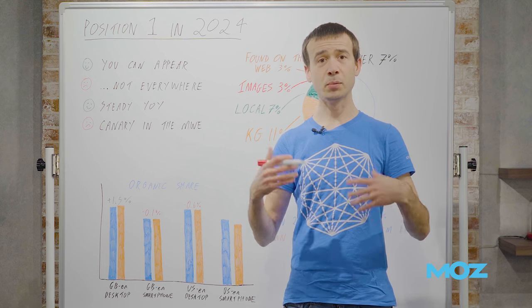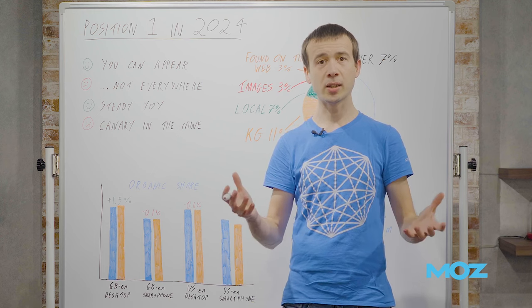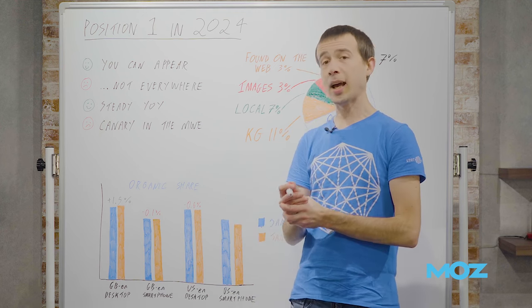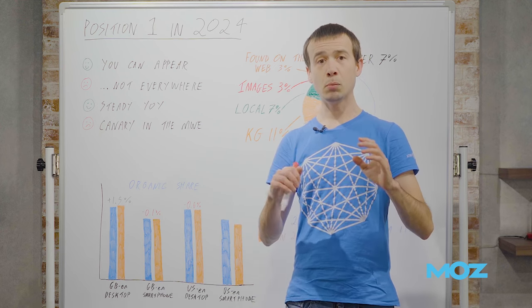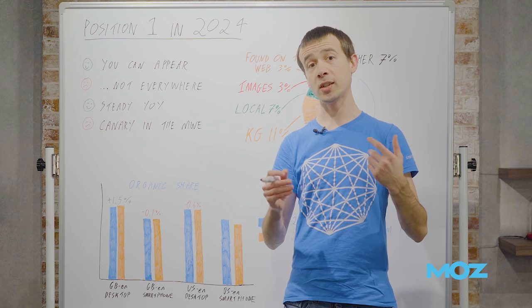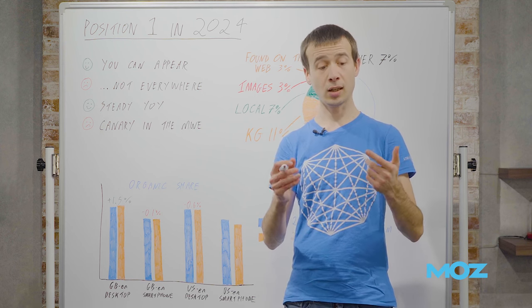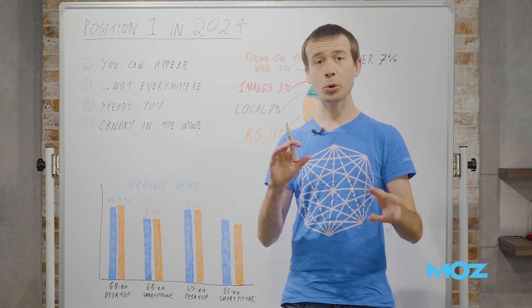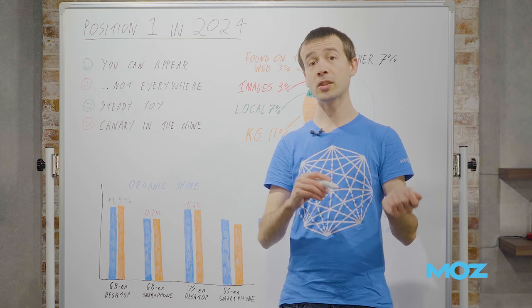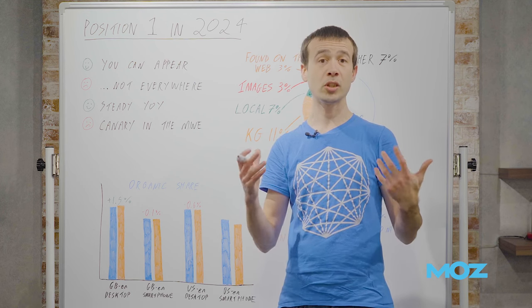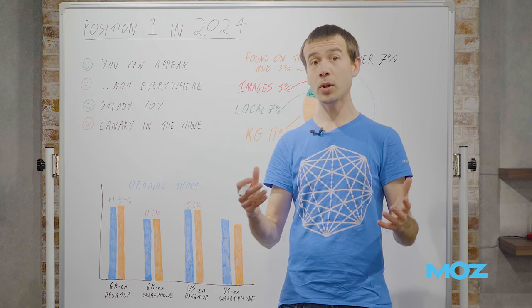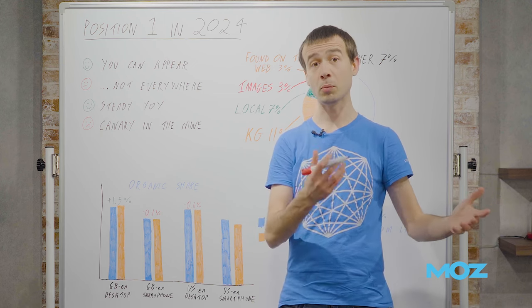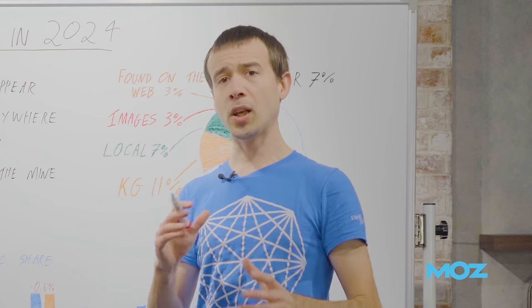Now, all the data I'm about to share with you is from STAT, our enterprise SERP analytics platform for rank tracking. I'm using the Mozcast corpus of keywords, which is 10,000 head terms tracked in the US and UK, on desktop and smartphone. That's 40,000 total keywords. We've had this as a consistent data set for a long time, both at Moz and now at STAT as well.